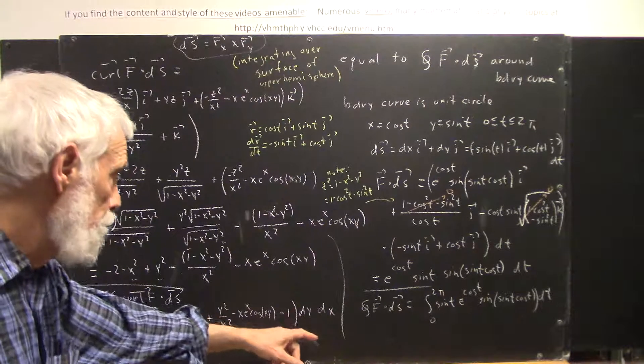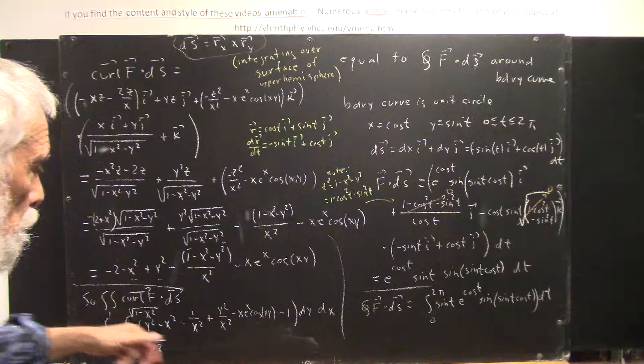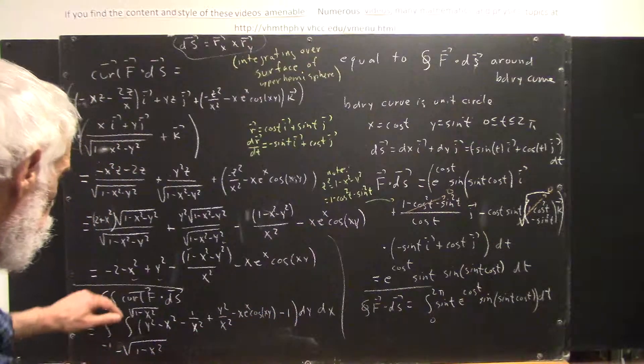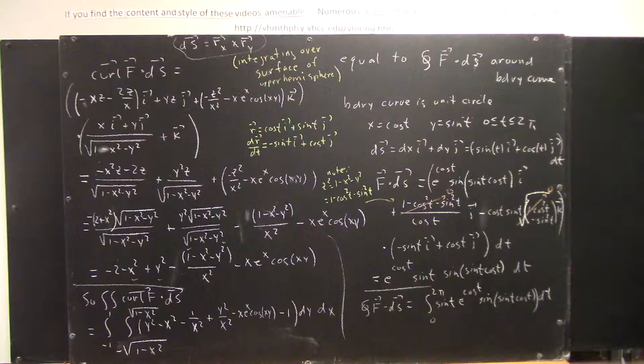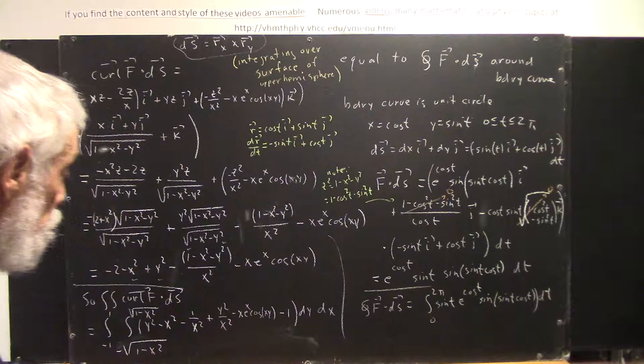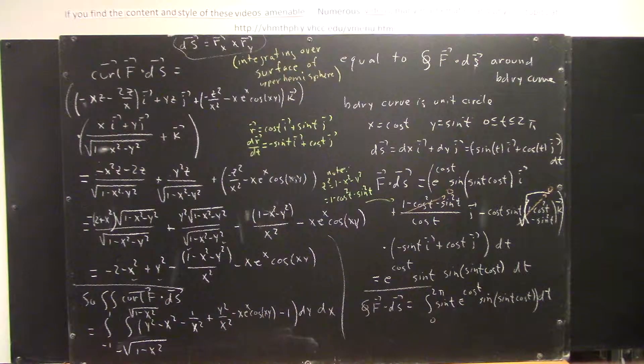Okay. So, the upper hemisphere lies above the unit circle down in the xy plane. And the unit circle is described by x going from negative 1 to 1,